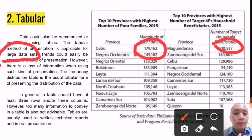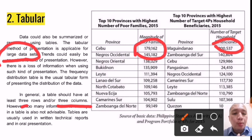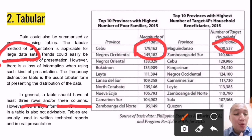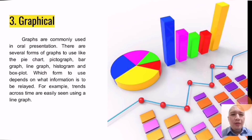If you have three or more columns or three or more rows, that is a good hint that you need to use tabular presentation. Otherwise, if you have fewer — for example, only one or two — you don't need to use tables; just go ahead and use textual presentation.